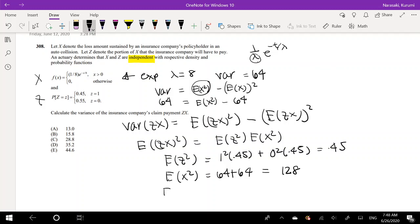So the second moment of ZX equals 0.45 times 128. Let me plug that into my calculator. 0.45 times 128, that's equal to 57.6.